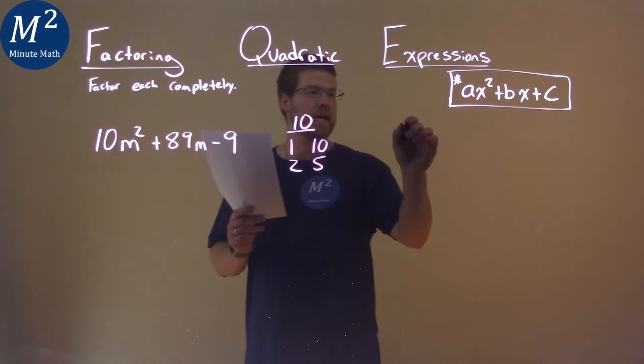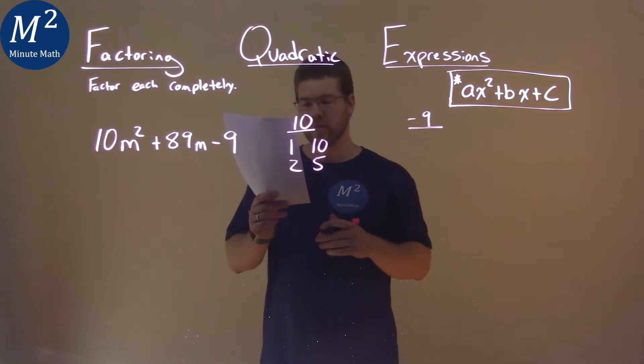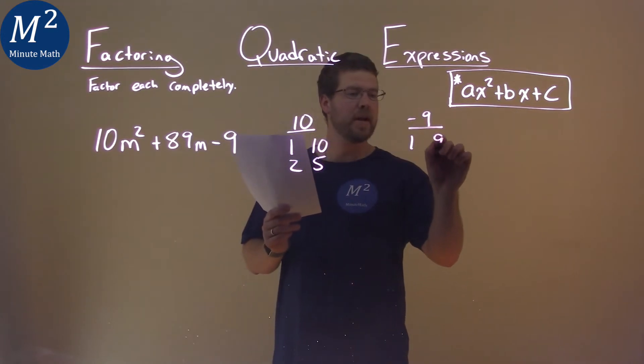Our c value is negative 9. Two numbers that multiply to be 9 are 1 and 9, and 3 and 3.